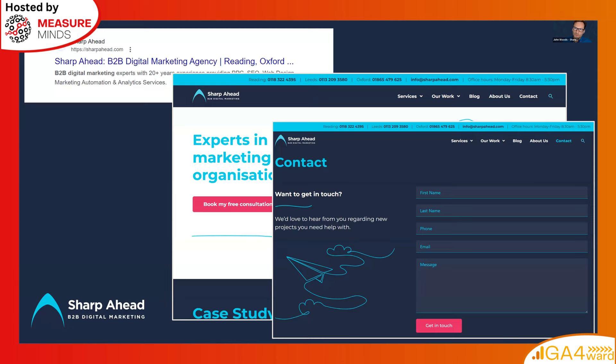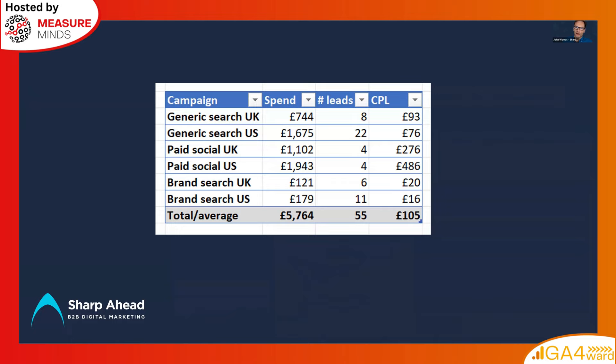We can use an analytics tool like GA4 to produce a report like this. This is slightly abstracted data — not a real screen share — but this is the sort of data you could configure GA4 to produce: a breakdown of the different campaigns I'm running, how much I spend on them, how many leads each one generated, and the cost per lead. That lets me compare campaigns and make smart decisions.